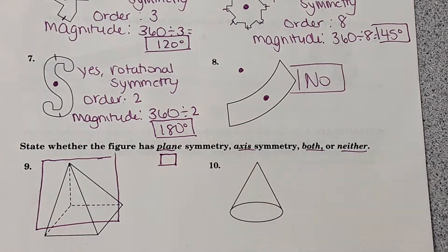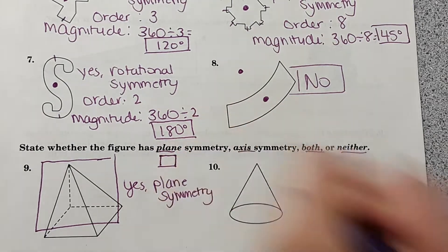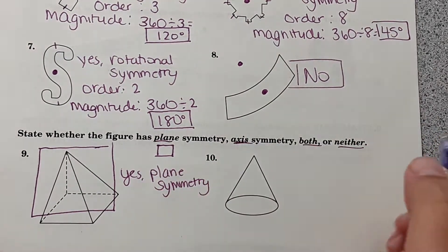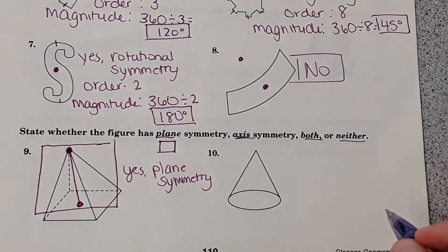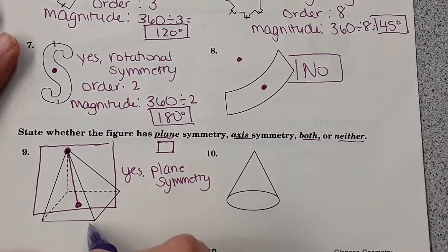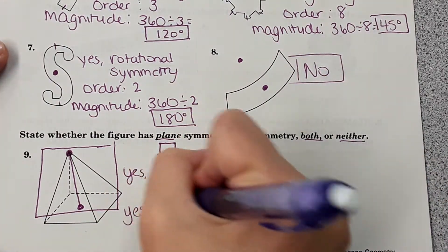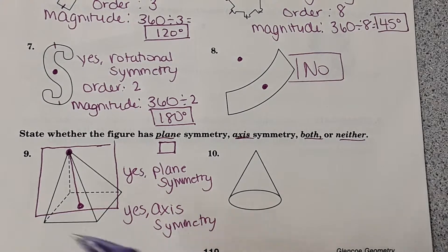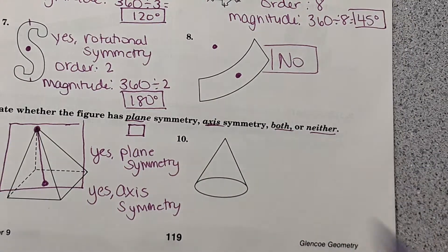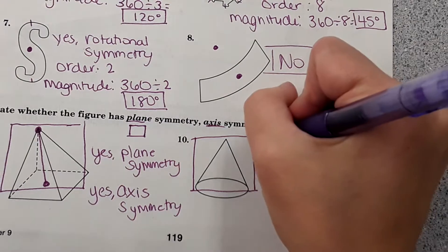If I draw a plane, it would slice the shape exactly in half — so yes to plane symmetry. Axis symmetry is when there's an axis in the center and the shape can rotate onto itself without going all the way around. For this square pyramid, it could rotate 90 degrees and land on itself, so yes to axis symmetry. The difference between axis symmetry and rotational symmetry is that axis symmetry applies to 3D shapes.